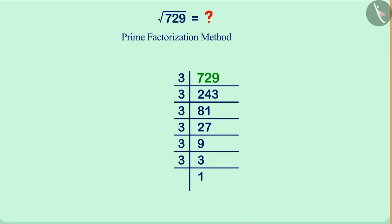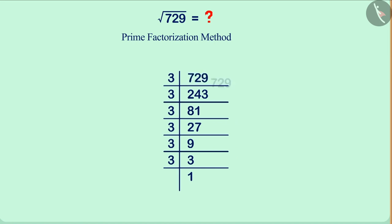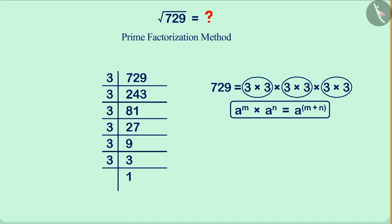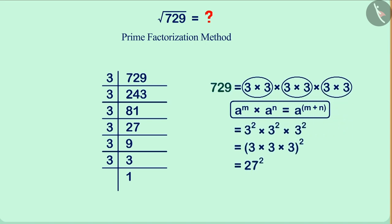We can write the number 729 as the product of its prime factors. Now we will see how many prime numbers are in pairs in this factorization. There are three pairs of number 3. By the laws of exponents, we can write this multiplication of factors, and we get 729 as the square of 27. That is, the square root of 729 is 27.